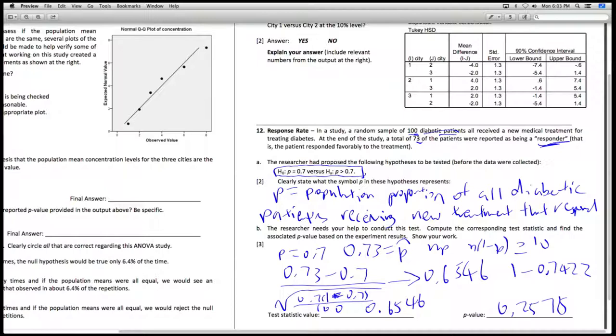But we need to take 1 minus that to get 0.2570. Since we looked up this p-value, and we want this p-value, because the alternative is that P is more than 0.7.